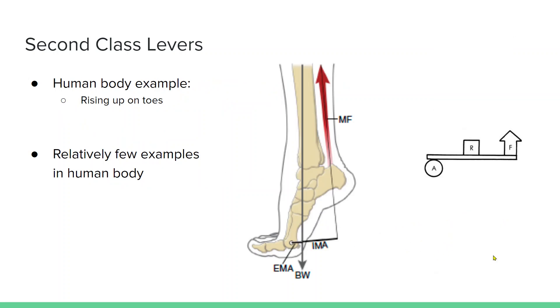In the human body, the only second class lever is if we're walking or rising up on our toes. And it's kind of a contrived second class lever system. But our axis of rotation is our toes, the body weight is acting close to that axis of rotation. And your muscle force of your gastroc soleus or your calf muscles are creating the force. So the resistance, our body weight, is closest to the axis. And so we don't have to generate as much force from our muscles.